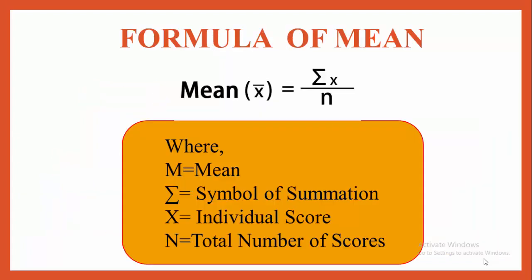Formula of mean: when ungrouped data or raw scores are given, calculate mean using M = ΣX / N, where M is mean, Σ is the summation symbol, X is the individual score, and N is the total number of scores. This formula is used for calculation of mean when ungrouped data is given.